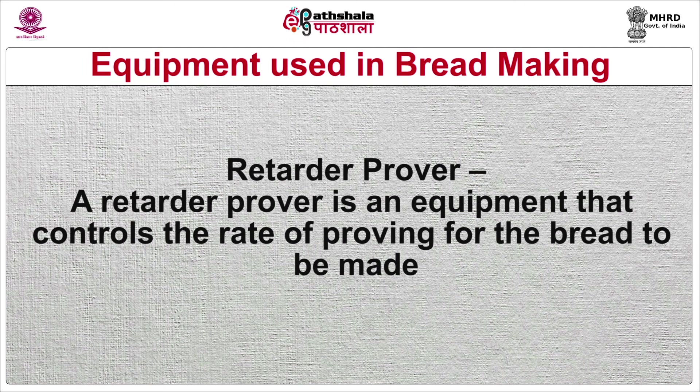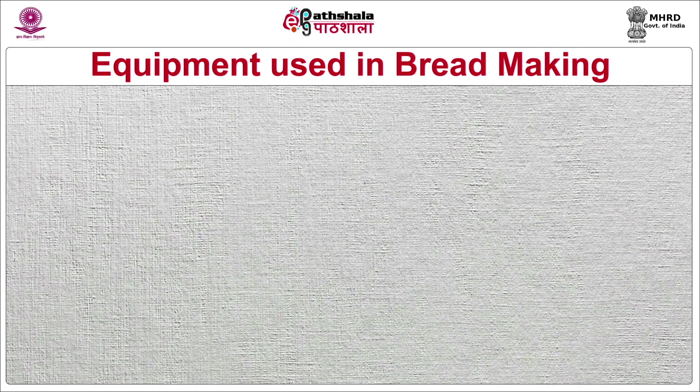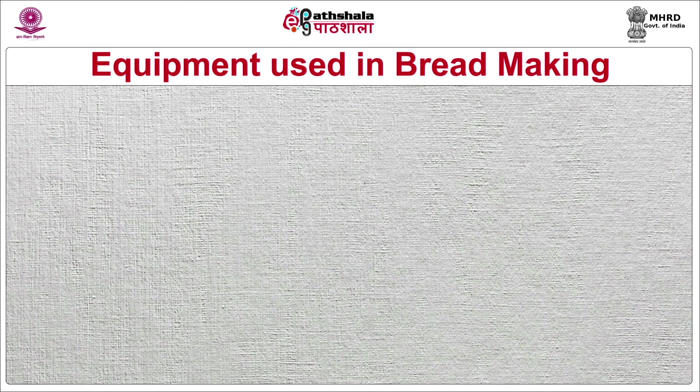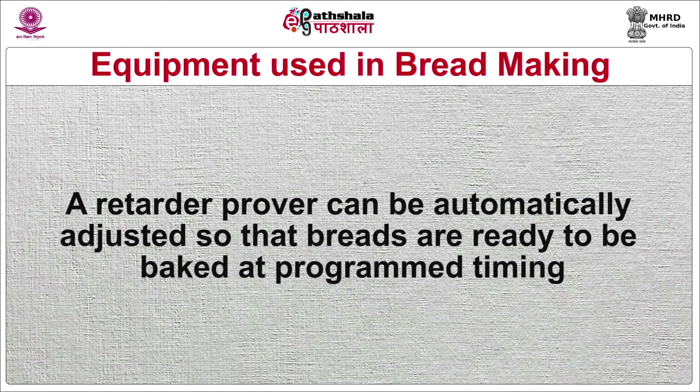A retarder prover is equipment that controls the rate of proving. The baker can shape the bread in the evening while the baking can be done at a later stage as and when required. A retarder prover automatically adjusts so that breads are ready to be baked at a programmed time. Dough mixers: various kinds of dough mixers are used to knead the dough. Spiral dough mixers are used in which the dough hook and the bowl both move in opposite directions so that the dough is automatically scraped while making. They are also tuned to two speeds — slow and high — as most bread recipes call for mixing dough at a particular speed for the optimum development of gluten.